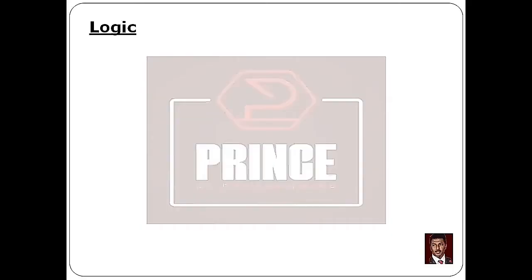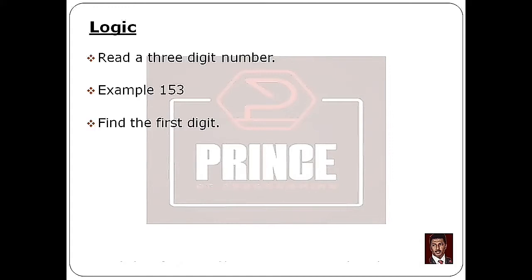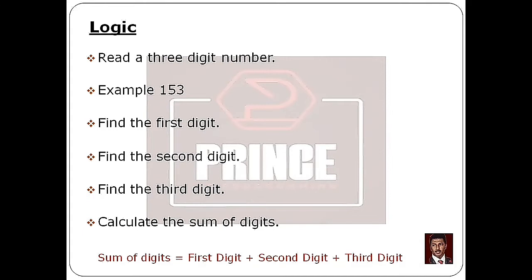We will talk about the first program in this tutorial. The first step is to read the 3-digit number. When we calculate the sum of digits, we will read the 3-digit number — that is the first step. For example, 153 is a 3-digit number. There are 3 digits. Then we will identify the first digit, second digit, and third digit.